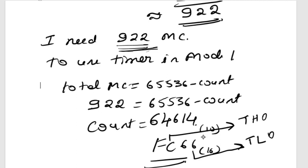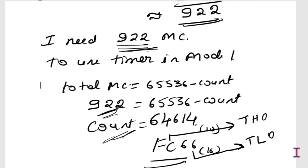When writing any timer delay program, follow these steps: first identify the required delay, then calculate the total machine cycles, then calculate the count value using 65536 minus machine cycles. Once you complete this calculation, half the work is done.